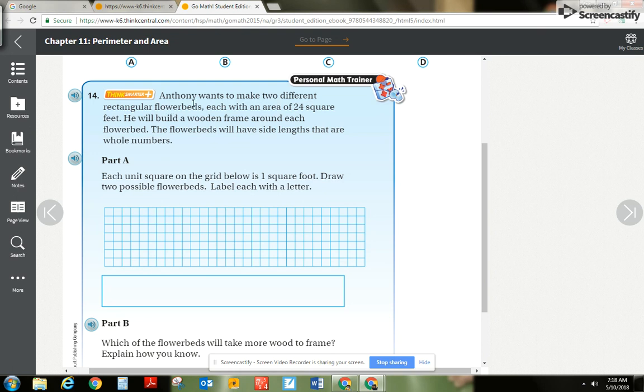Anthony wants to make two different rectangular flower beds. So we're going to have an A rectangular bed and a B rectangular bed. And the area is going to be 24 square feet. So the area equals 24 feet squared. And I know that area is found by length times width equals the area, and in this case that's going to be 24. So that's kind of like a blank times blank equals 24. So I want you to pause it and think of some different ways that we can do blank times blank equals 24.